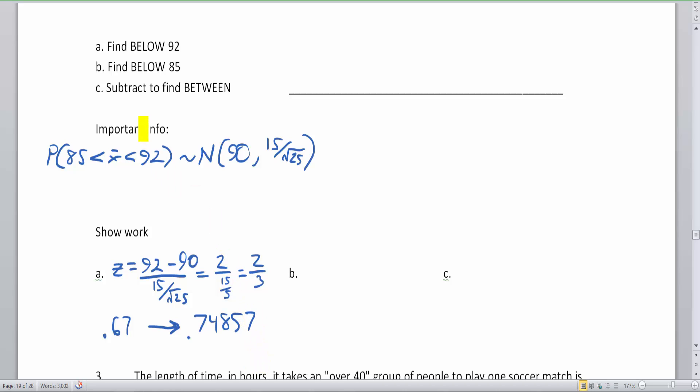Now we're going to go below 85. This is going to give me Z equals 85 minus 90 divided by 15 divided by the square root of 25. So my numerator is going to be in this case negative 5. And my denominator is the same as the denominator over here. So this is negative 5 thirds. So that z-score is negative 1.67. I'm going to use just two decimals because my z-chart only goes to two decimals.